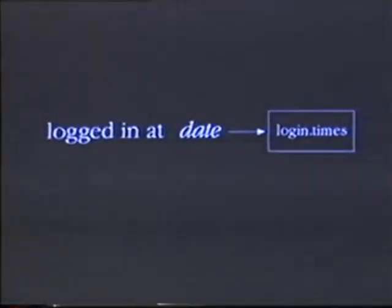Another shell metacharacter performs a kind of sequential execution. However, it allows you to execute one command such that its output is inserted into the command line of a second command. For example, I want to put the message 'logged in at' and the date into login.times. To do this, I have to perform two steps: first, run the date command, then put the output of date and the words 'logged in at' into the login.times file. I can perform both steps on a single command line using back quotes, which allow me to combine the output of one command with command line arguments of a second command.